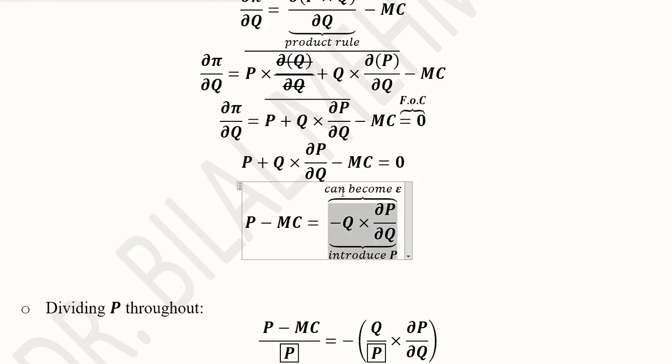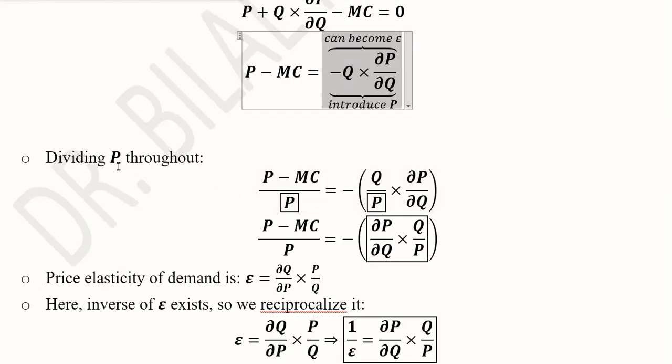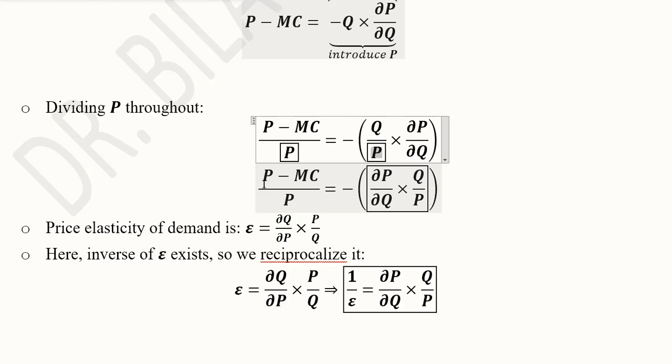If we introduce price it can become elasticity of demand. We divided by price throughout. Here in this box we can see this additional price variable. This overall term is the reciprocal of elasticity of demand. When I look at the formula of elasticity of demand it is ∂Q/∂P × P/Q. So its reciprocal will be equal to this which I want to have: ∂P/∂Q × Q/P. We equate it and that becomes 1/ε.